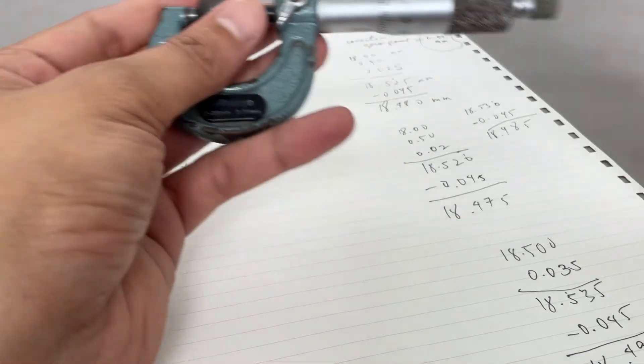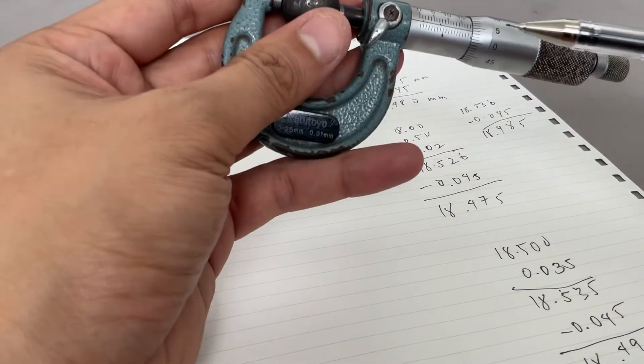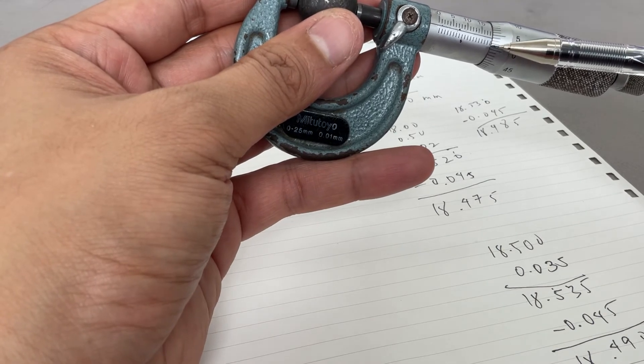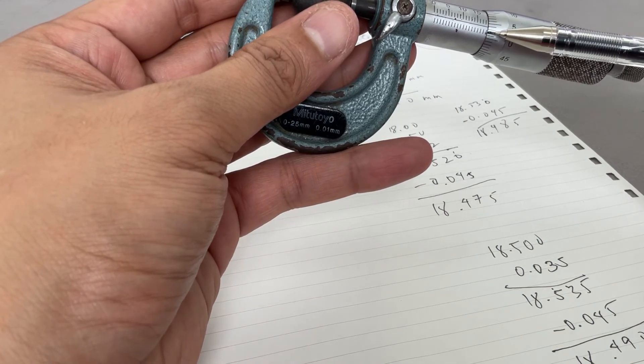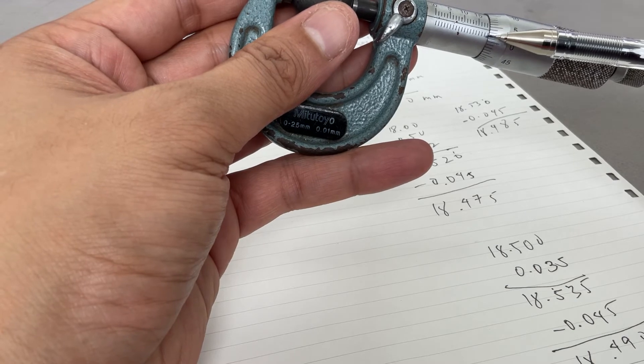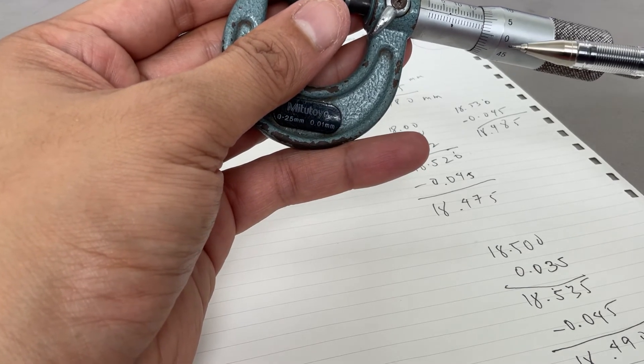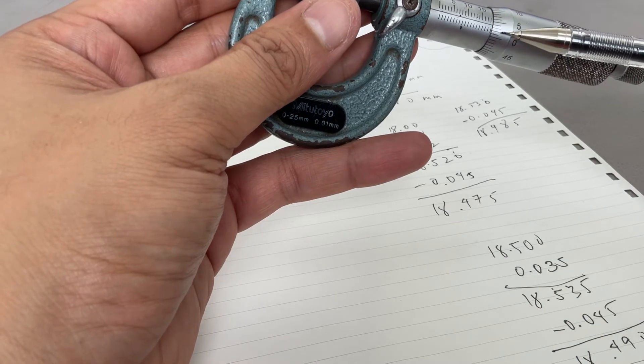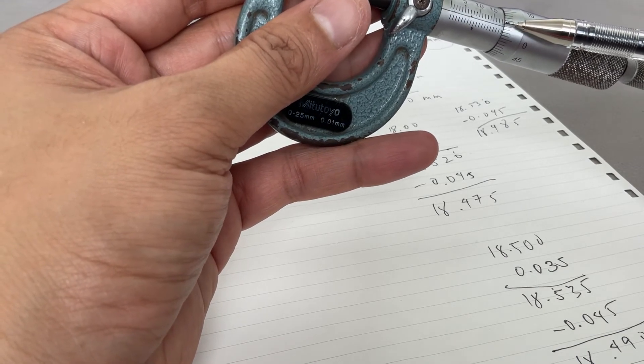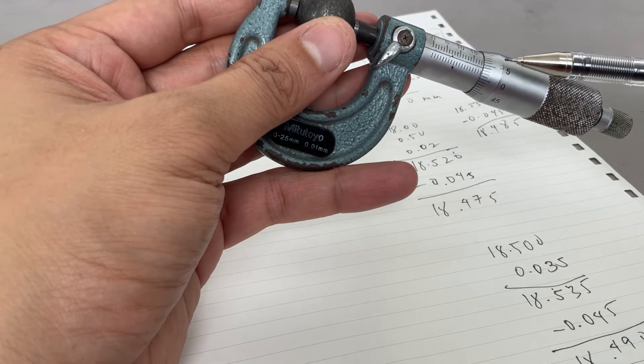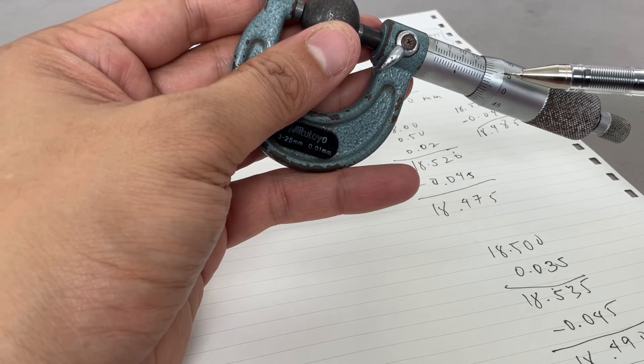But don't forget the zero correction - always have to deduct this. Read the main scale first, then look if it passes by the half line. So if this is 18, did it pass by the half line? 18.5. Then on the micrometer scale, look for the line that perfectly coincides with the main scale horizontal line. You're ready to read.